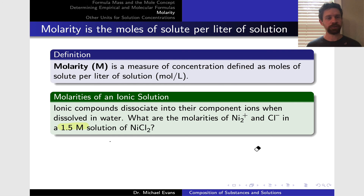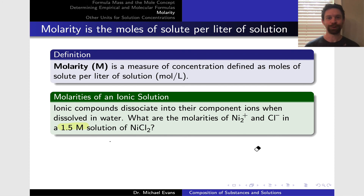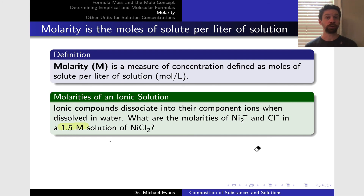Now that we've defined concentration, let's talk about some concentration units. By far the most important unit of concentration for chemistry is called molarity. Molarity is defined as the moles of a solute per liter of solution. We can define a molarity for all the various solutes within a solution, including each distinct ion within a solution of an ionic compound. Unless you see otherwise, we're going to assume the solvent is water — that we're dealing with aqueous solutions.